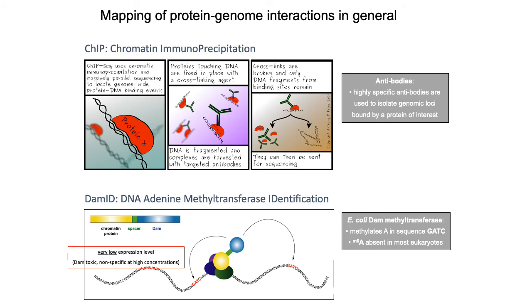There are two main assays for measuring protein-genome interactions. With ChIP-seq, we can use antibodies specific to lamin proteins to pull down regions of the genome associated with the nuclear lamina. The other technique is called DAM-ID, which relies on a protein domain called DAM methyltransferase. This domain methylates adenine in the sequence motif GATC. If you create a fusion protein of DAM with one of the lamin proteins, then DAM will methylate the GATC motif whenever the associated lamin is close to a region of the genome that also contains that GATC motif.